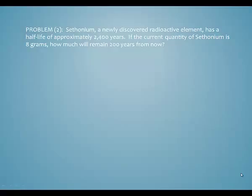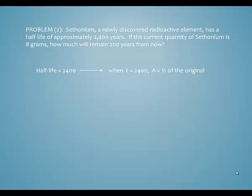Here's the second problem. Cythonium, a newly discovered radioactive element, has a half-life of approximately 2,400 years. If the current quantity of Cythonium is 8 grams, how much will be left 200 years from now? We're told the half-life is 2,400 years, which means if t is 2,400, the amount of Cythonium is going to be exactly half of the original amount.